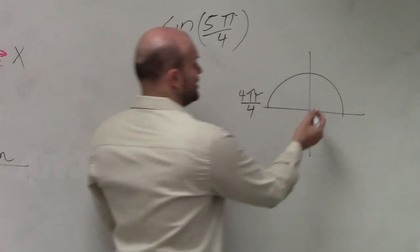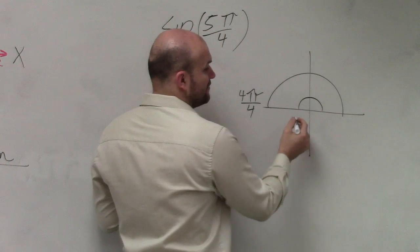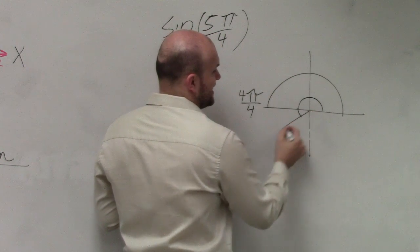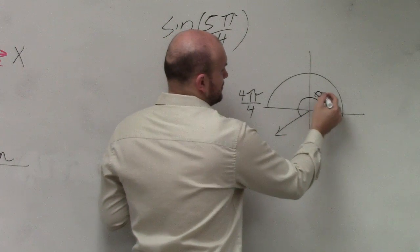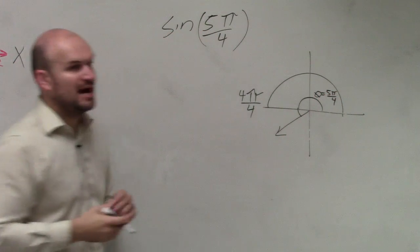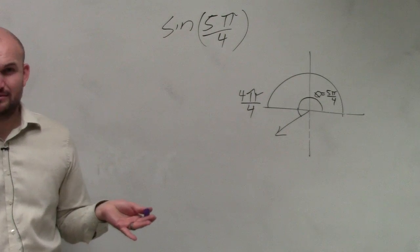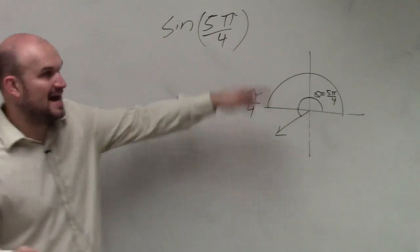So if I was going to draw an angle, 5 pi over 4, that's just going to be an extra pi over 4. Does everybody kind of see that? It's just a little extra over there. It's past pi.